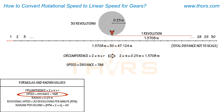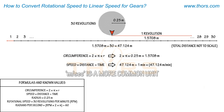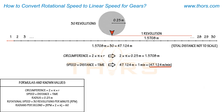We know that speed is calculated as distance over time, therefore 47.124 meters per minute is the linear speed. Since meters per second is a unit of measurement commonly used to express linear motion, convert 47.124 meters per minute into meters per second by dividing by 60. This results in a linear speed of 0.7854 meters per second.